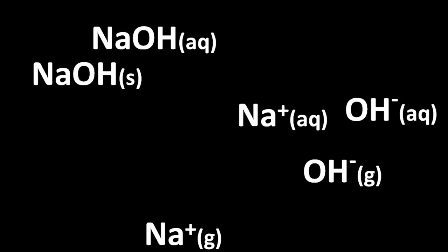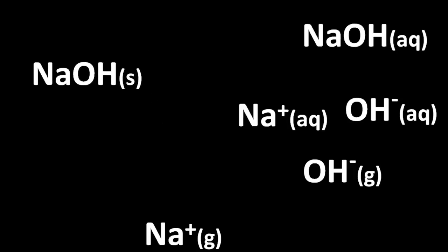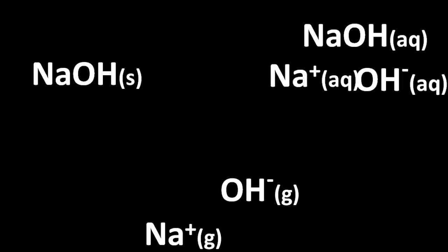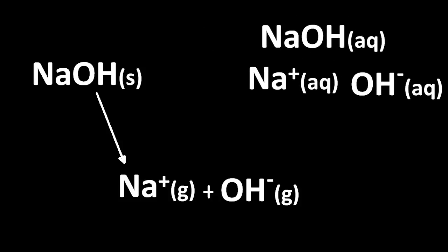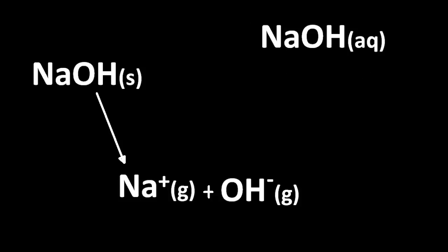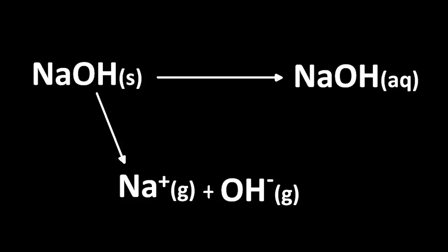So let me rearrange all these symbols to try and make this energy cycle that you need to know. OK, so if you turn the solid ionic lattice into gaseous ions, that is called delta H lattice. And if you turn the solid ionic compound into the aqueous ions, that is called delta H solution. And if you turn the gaseous ions into the aqueous ions, that is called delta H hydration.